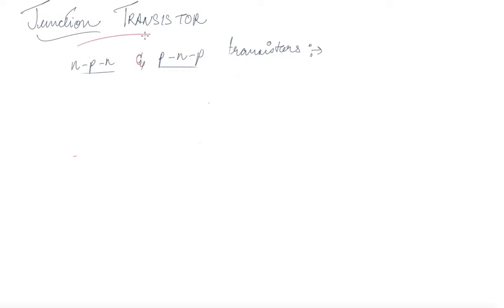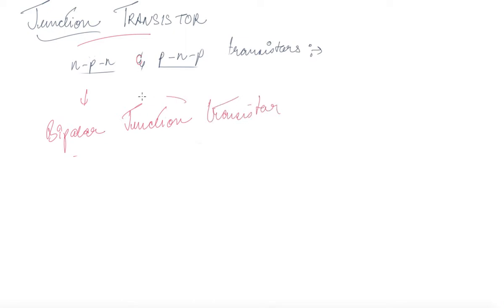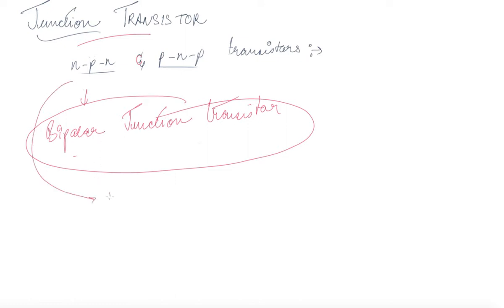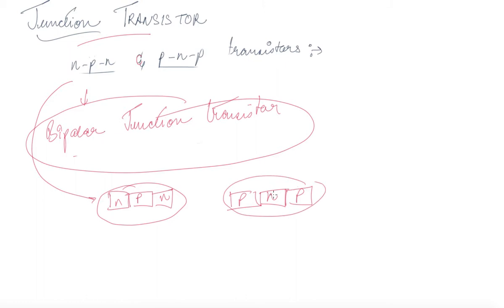We will have a discussion on junction transistors. Junction transistors are formed when N and P are joined together — this joining point is known as a junction. In this topic we will be discussing the bipolar junction transistor (BJT). We take two types of semiconductors and join them as N-P-N, or alternatively as P-N-P, giving us the two types of bipolar junction transistors.